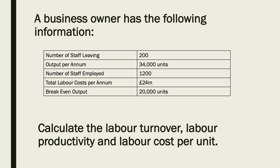The number of staff leaving: 200. Output per annum per year: 34,000 units. Number of staff employed: 1,200. Total labour costs per annum: 24 million. And breakeven output: 20,000 units.